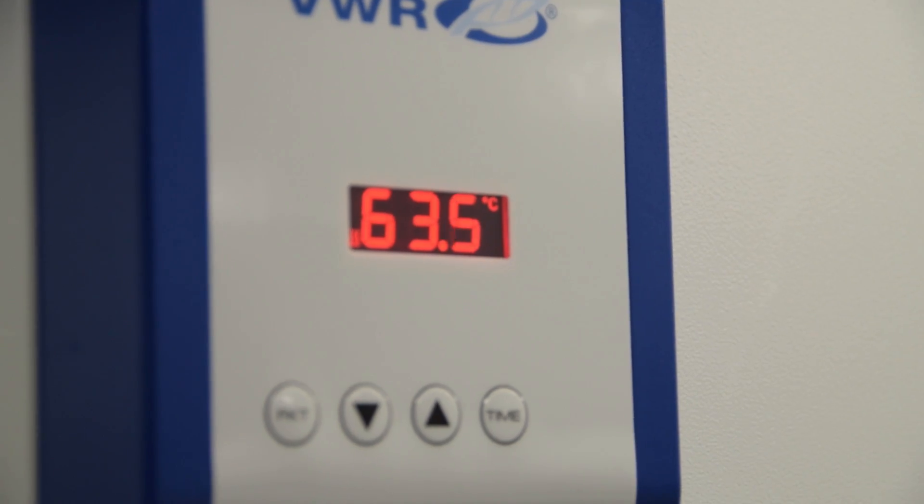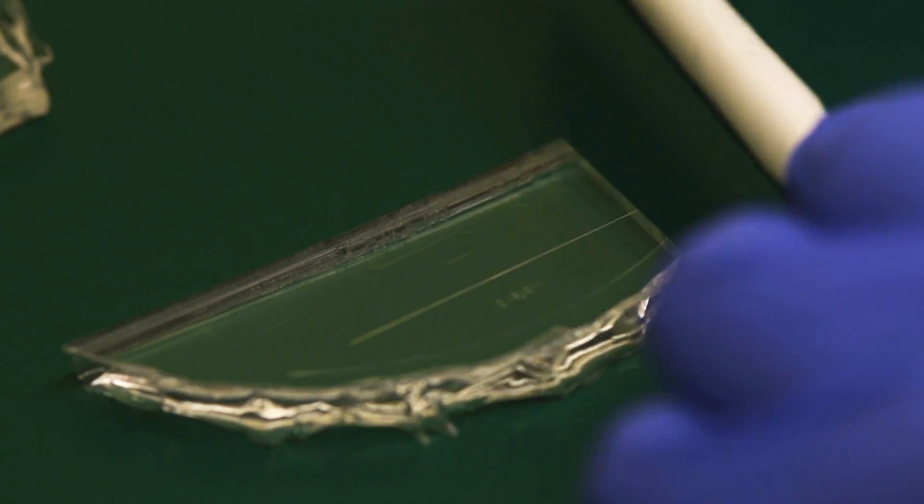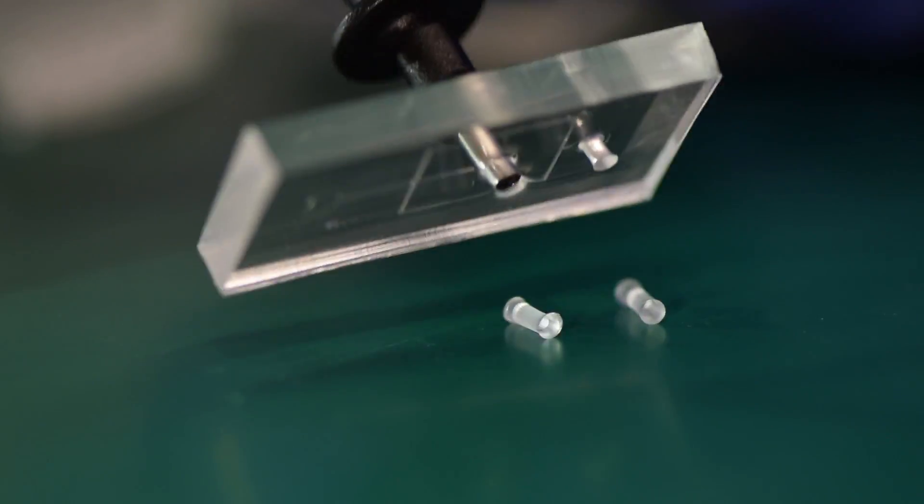After an hour, we can take out the PDMS which has become solid. We take away the aluminum and the mold, and cut out of the PDMS the area around the circuit we want. Now we just need to make holes with a punch for the liquid's inlets and outlets.